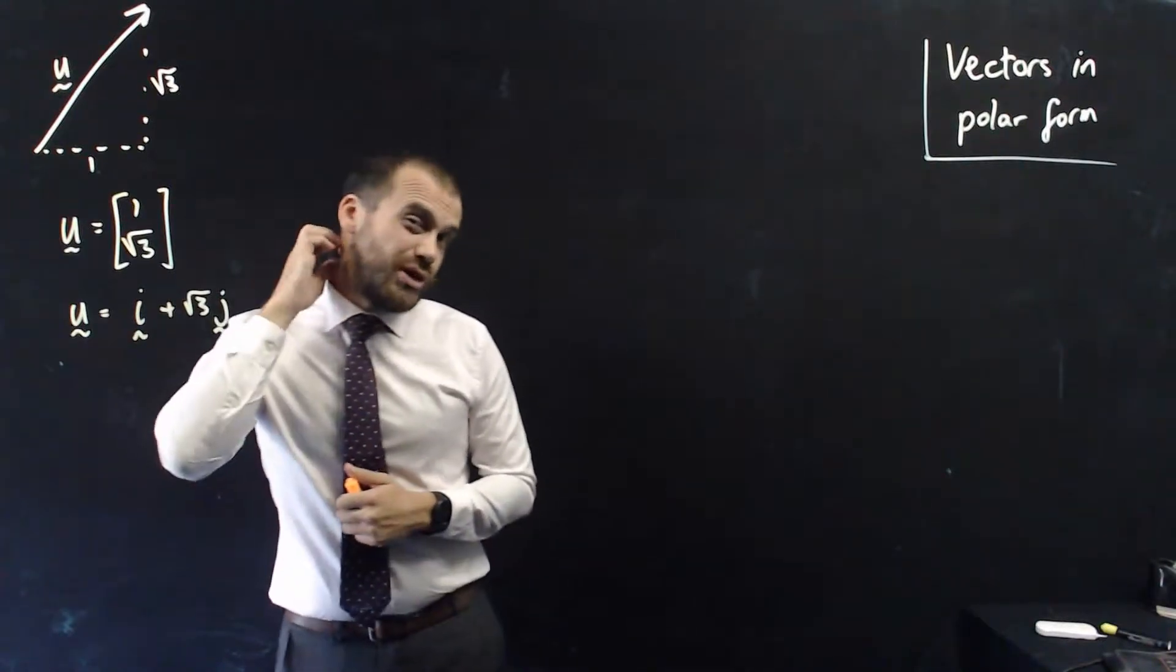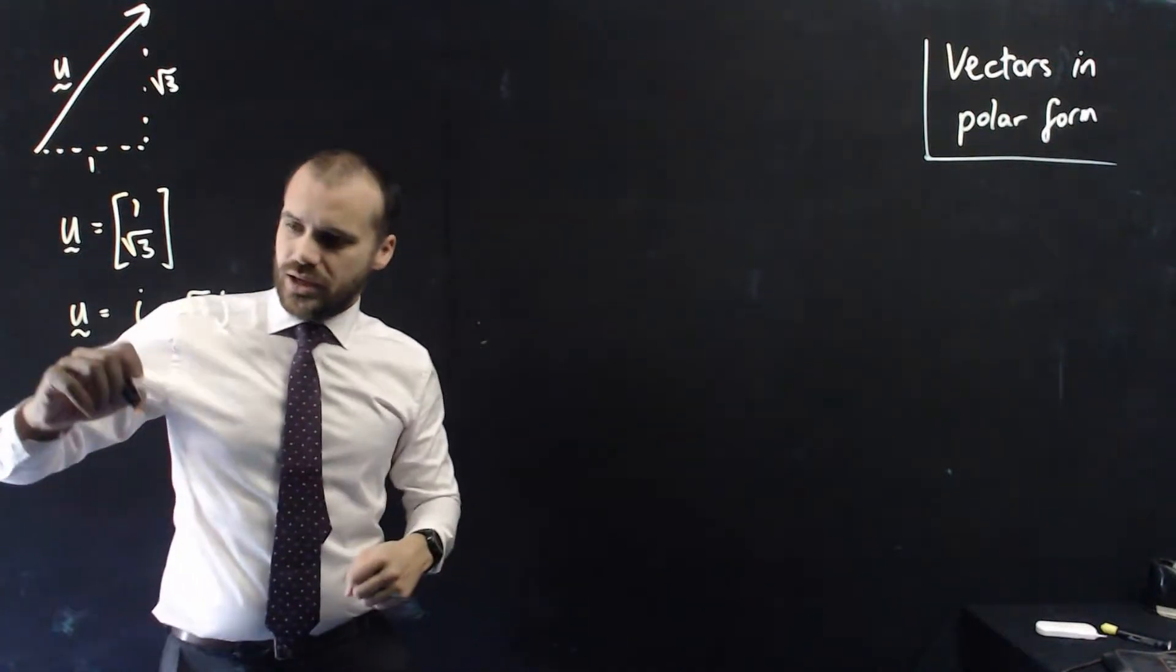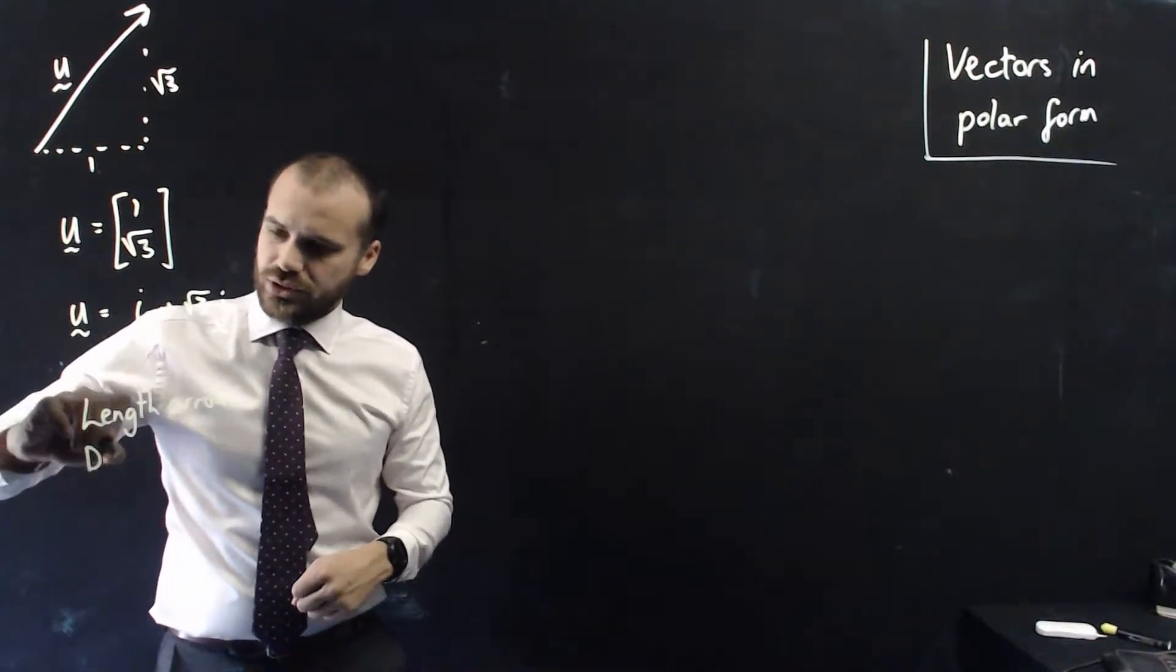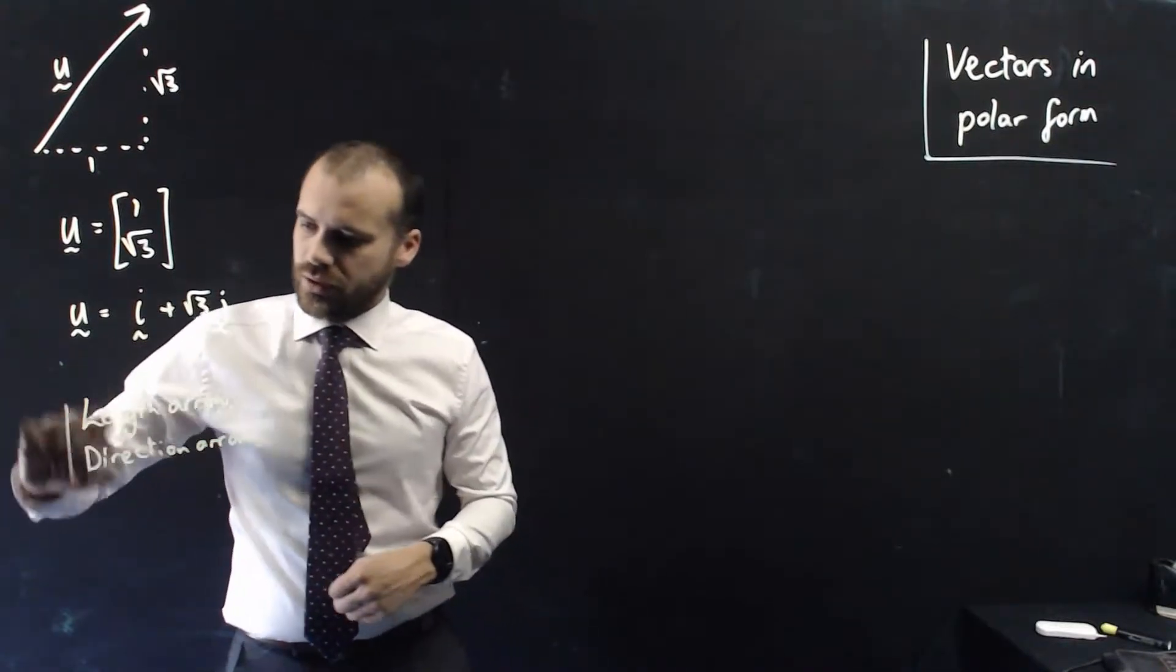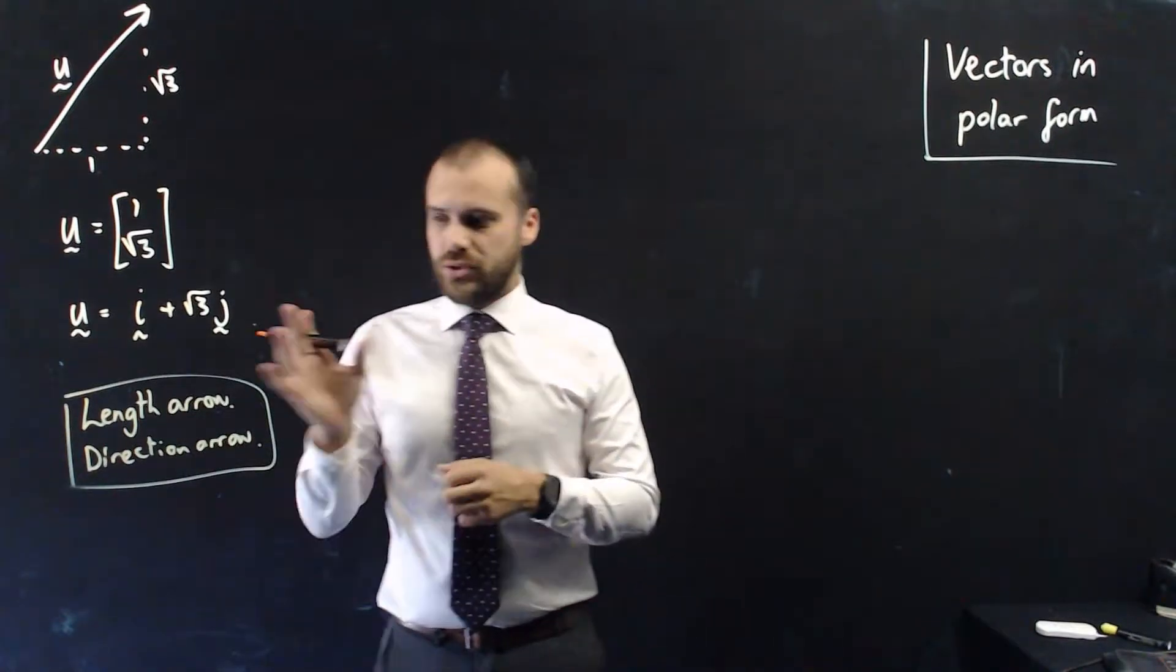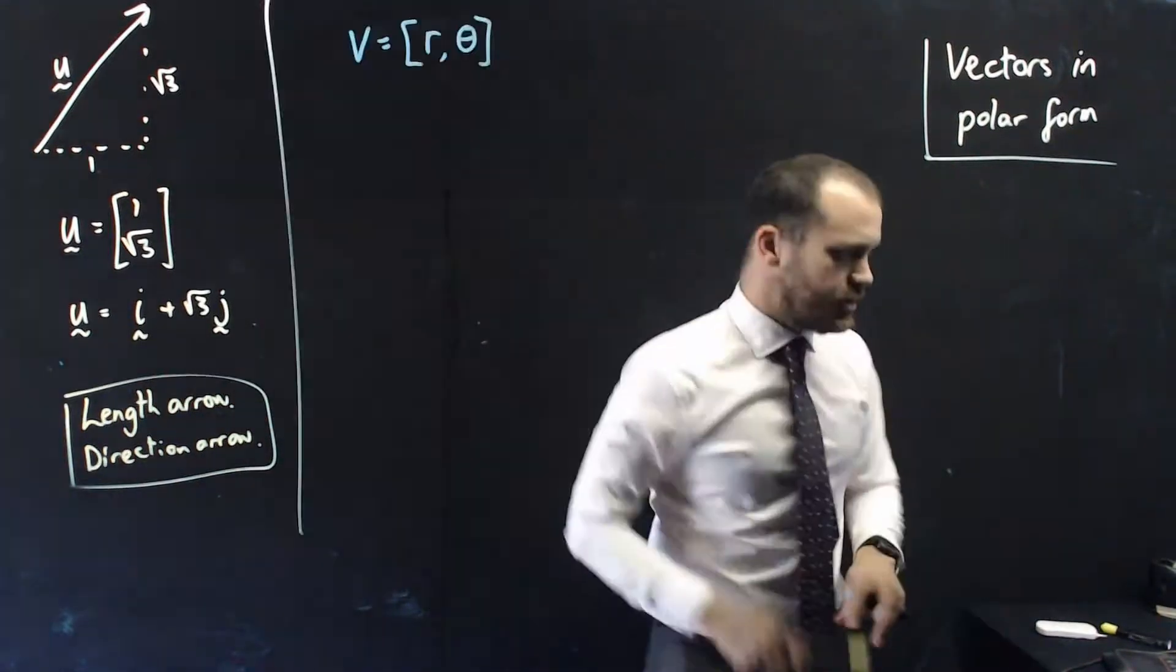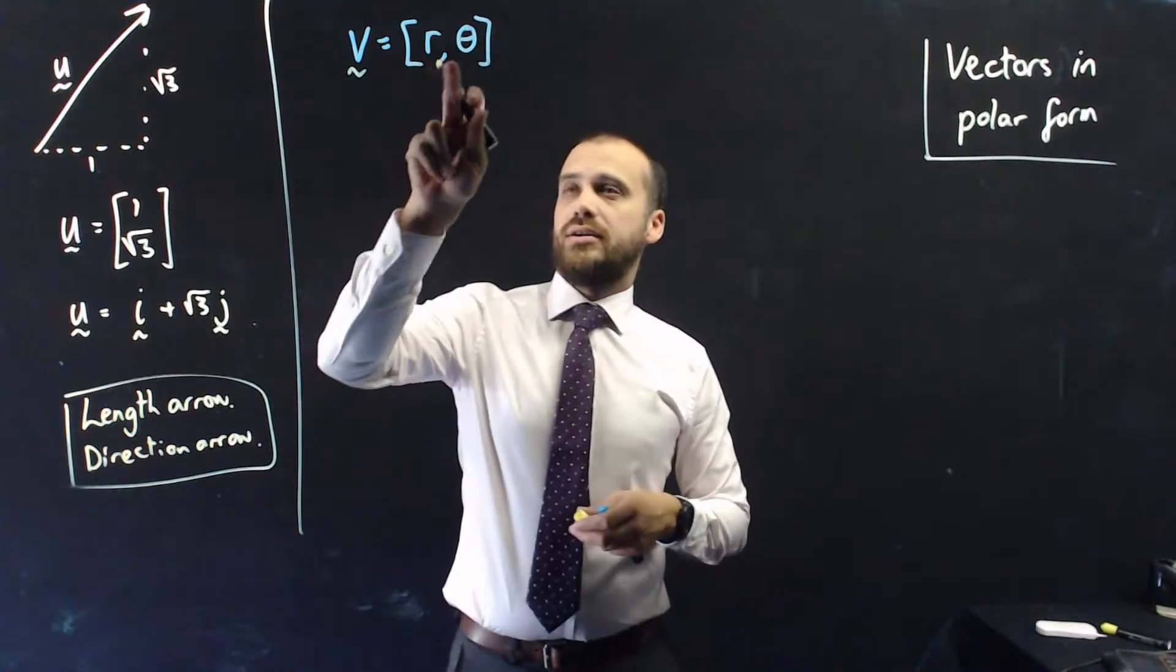Now, if I wanted you to draw an arrow, there is a different way that I could tell you how to draw an arrow. I just have to tell you two things. If I told you the length of the arrow, and I told you the direction of the arrow, you could draw it perfectly. And so those two bits of information, length of arrow and direction of arrow, are how we create polar form. Polar form looks like, we have a vector v, and it's in square brackets, r theta.